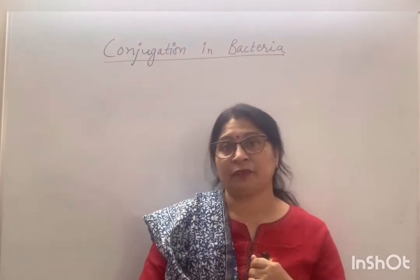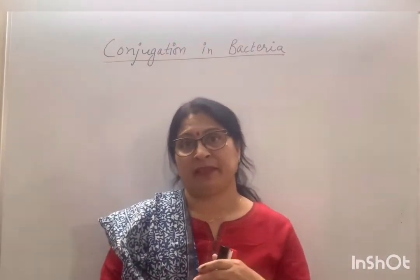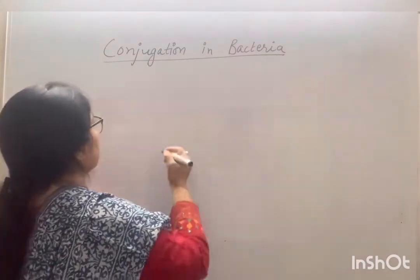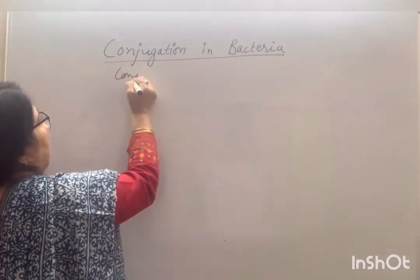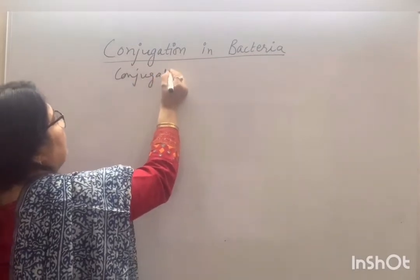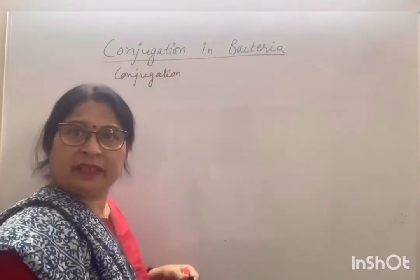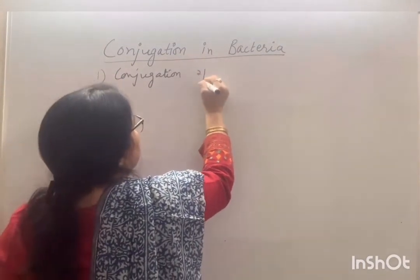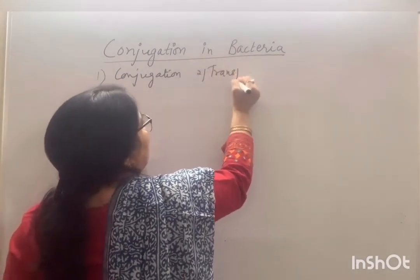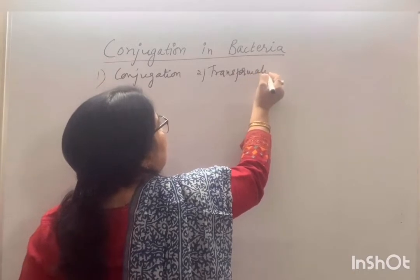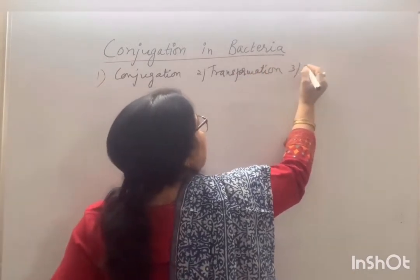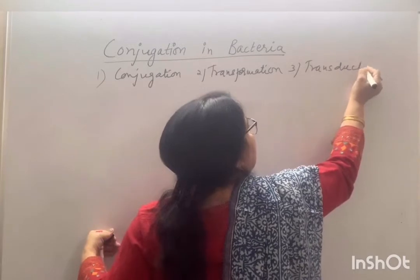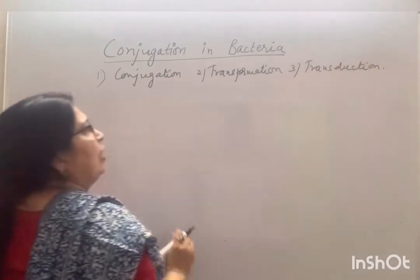There are three methods by which genetic material is transferred in bacteria: the first is conjugation, the second is transformation, and the third is transduction.